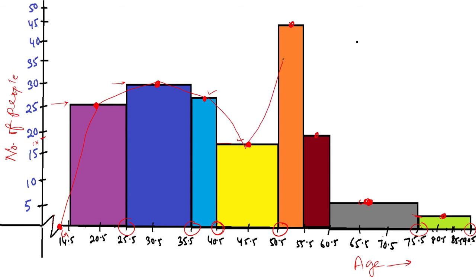Please try to draw straight lines when joining. After the last midpoint, take a final point M on the x-axis after the last bar where the frequency again becomes zero. The frequency polygon is complete because it begins with zero frequency at Z and ends with zero frequency at M. I hope you understood — if not, please write in the comments below and we'll meet in the next video.